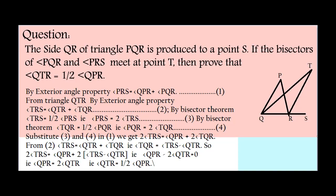Now substitute equation 3 and equation 4 in equation 1. We get 2 angle TRS equals angle QPR plus 2 angle TQR. From equation 2, angle TRS equals angle QTR plus angle TQR.